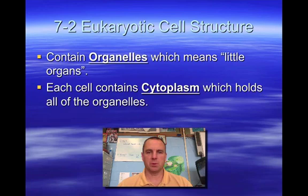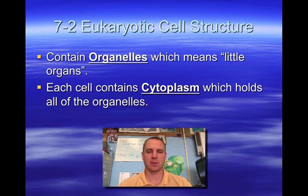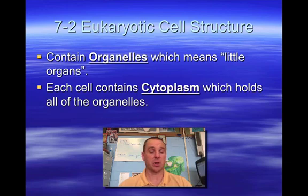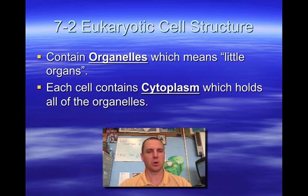We talk about eukaryotic cells. Remember, eukaryotic means that they have a nucleus. Prokaryotic means they don't. Eukaryotic cells contain organelles. Think of organelles as tiny organs — just like inside of you, you have a heart, a lung, a liver, a stomach. Those are all organs, and they all work together to make you work. In a cell, the organelles are like tiny organs, and they all work together to make the cell work.